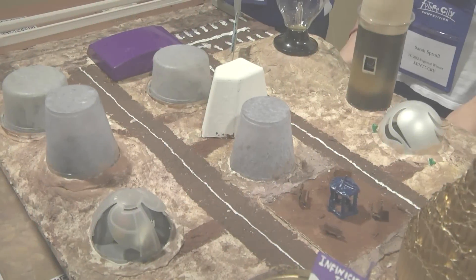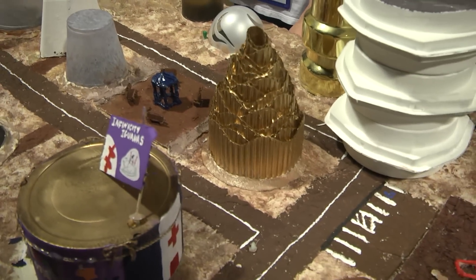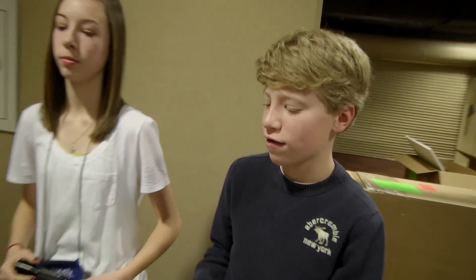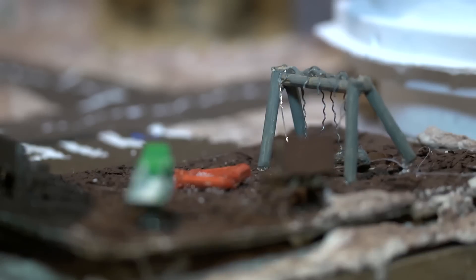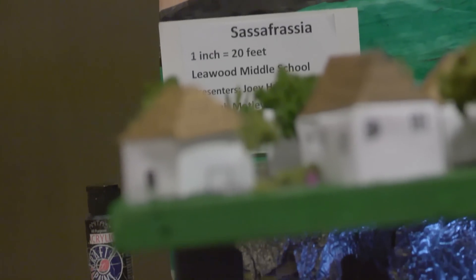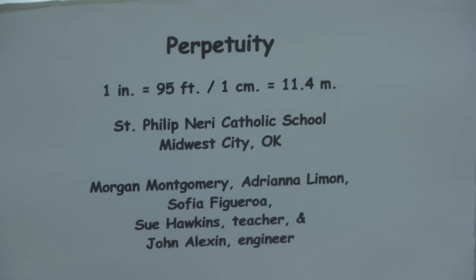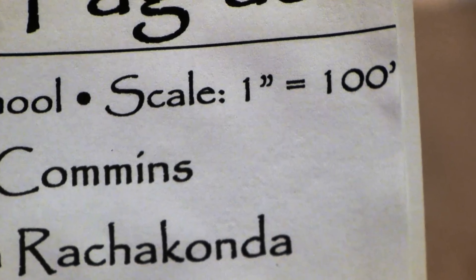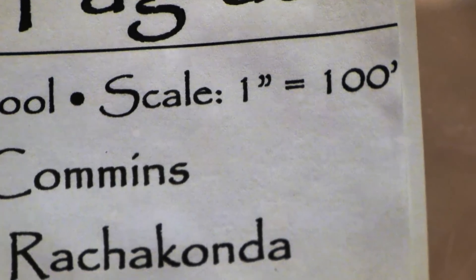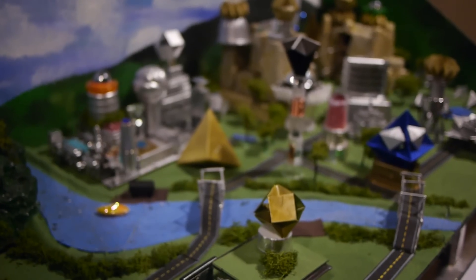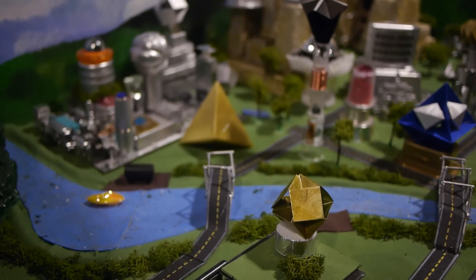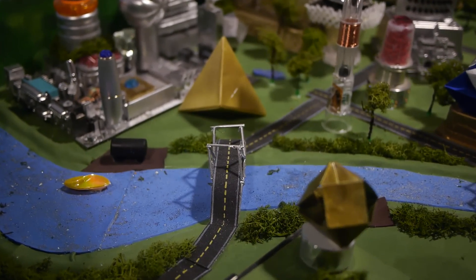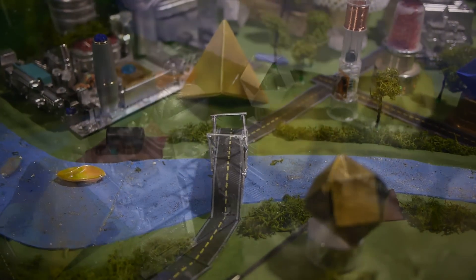We had a lot of trouble with our scale at first. We were changing it, trying to make it look realistic but also be able to give detail in our city. Scale means that one measurement unit on your model represents a specific larger measurement unit in real life. If you use the scale a quarter inch to one foot, every quarter inch on your model would represent a foot in a real city.